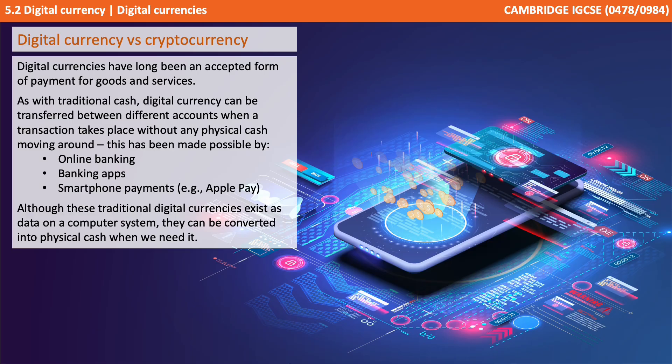Digital currencies have long been an accepted form of payment for goods and services. As with traditional cash, digital currency can be transferred between different accounts when a transaction takes place without any physical cash moving around. This has been made possible due to online banking, phone banking apps, and smartphone payments such as Apple Pay. Although these traditional digital currencies exist as data on a computer system, they can be transferred into physical cash when needed.